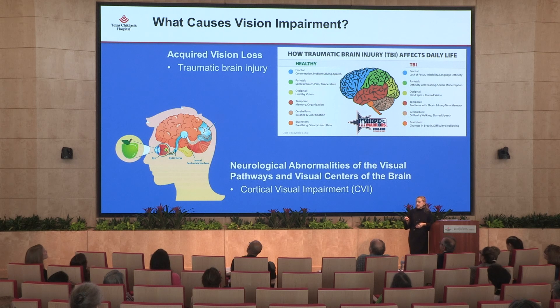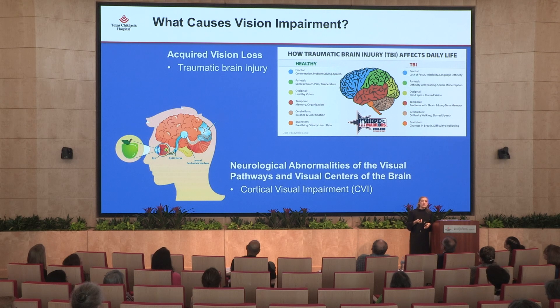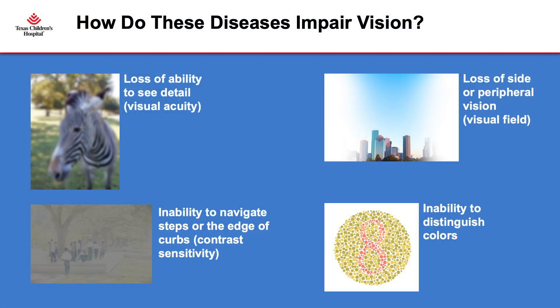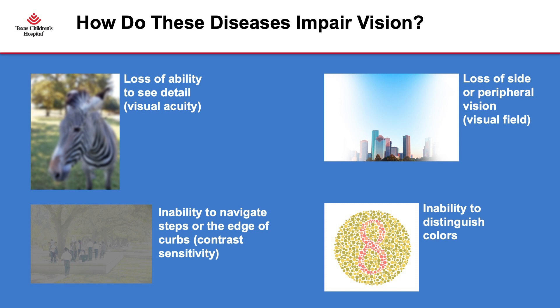At Texas Children's we see kids from all different walks of life and levels of abilities. We see kids with traumatic brain injury and a fair amount with cortical visual impairment, which is when the eyes are generally healthy but the brain is not properly interpreting vision. These diseases can decrease visual acuity, cause blurred vision, and frequently cause loss of peripheral vision — which is especially important since we read left to right, affecting reading ability and requiring compensatory strategies.